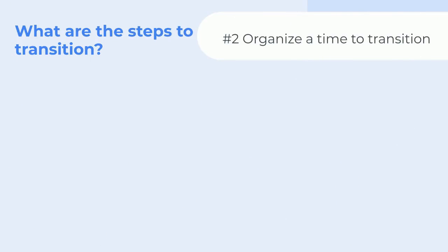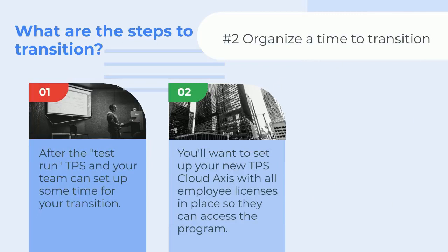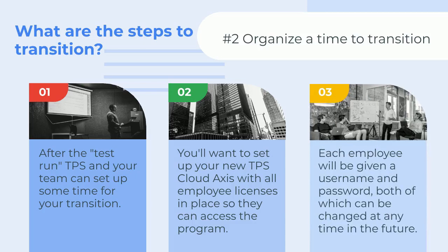Step two is to organize a time to transition. After the conversion team's test run, they can organize a time with your team to do the transition. You will want to set up your new TPS Cloud Access subscription with all employee licenses in place so they can access the program. Then each employee will be given a username and password.